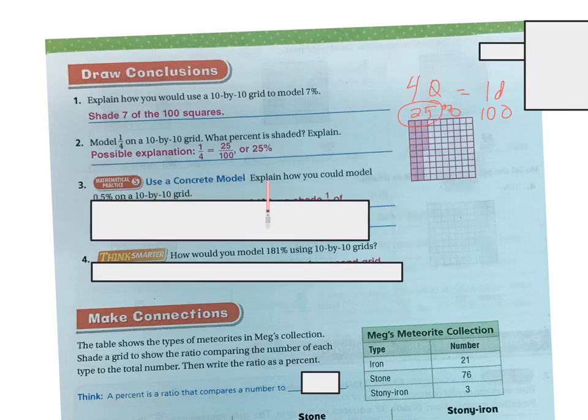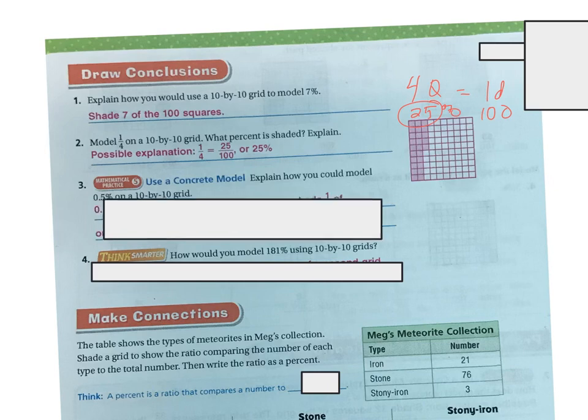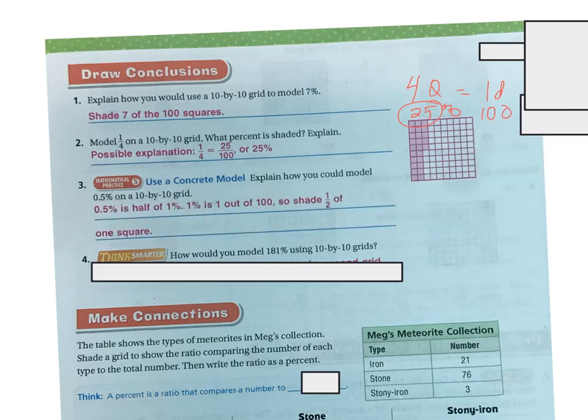Number three, use a concrete model. Explain how you could model 0.5% on a 10 by 10 grid. Well, 0.5% is half of one whole percent and 1% is one out of 100. So you would shade half of one of the squares.